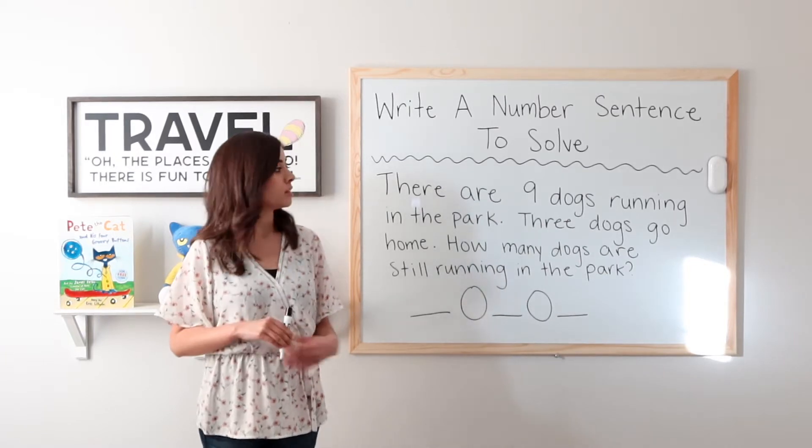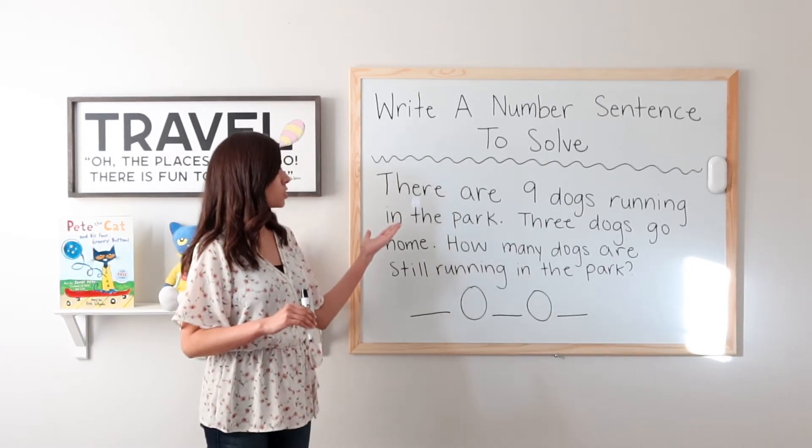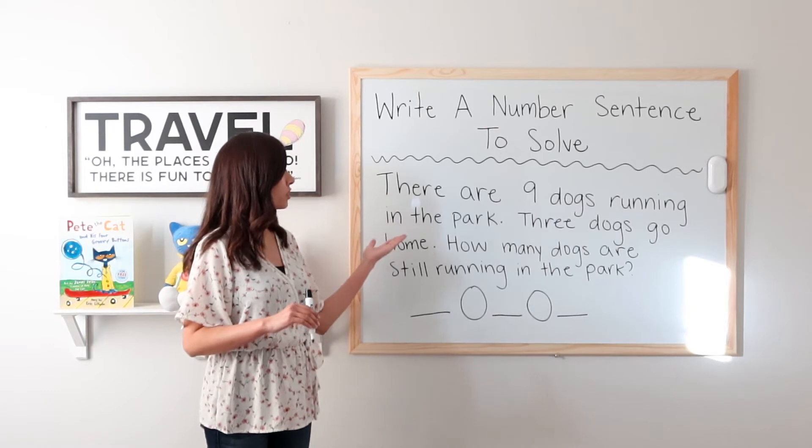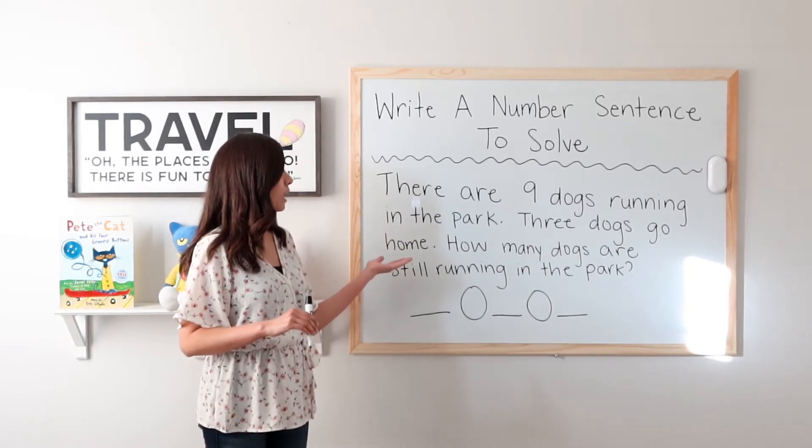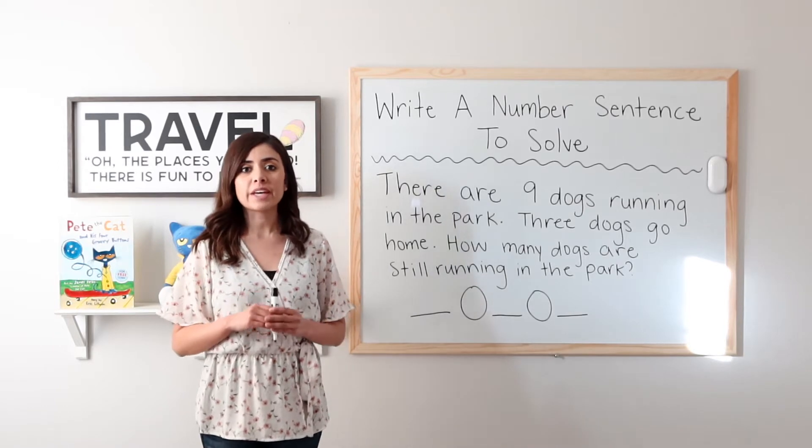We will start by reading. There are nine dogs running in the park. Three dogs go home. How many dogs are still running in the park? Okay.